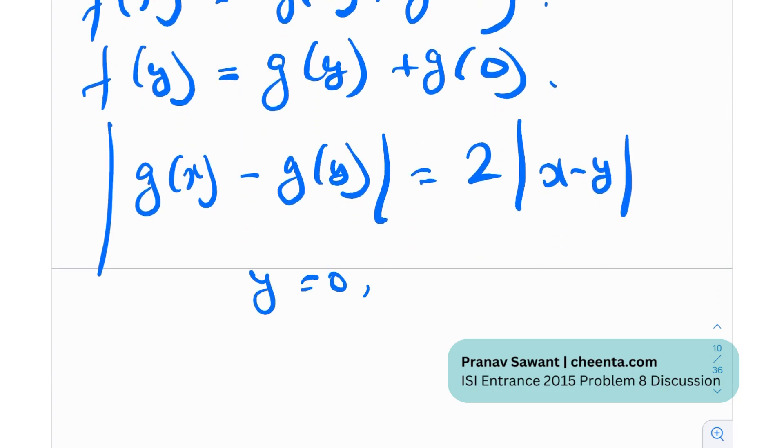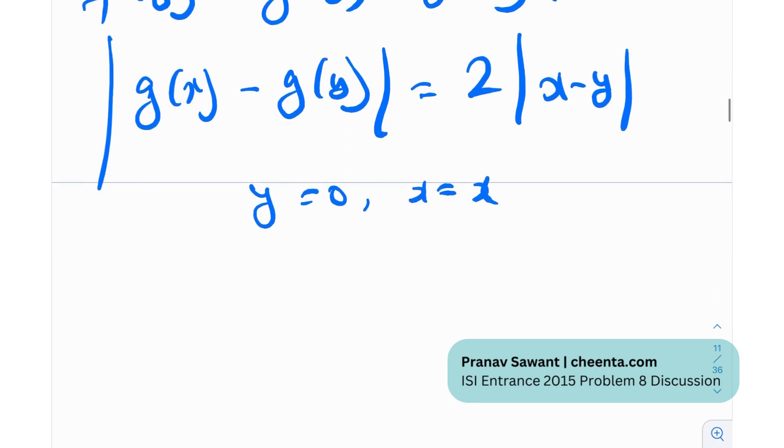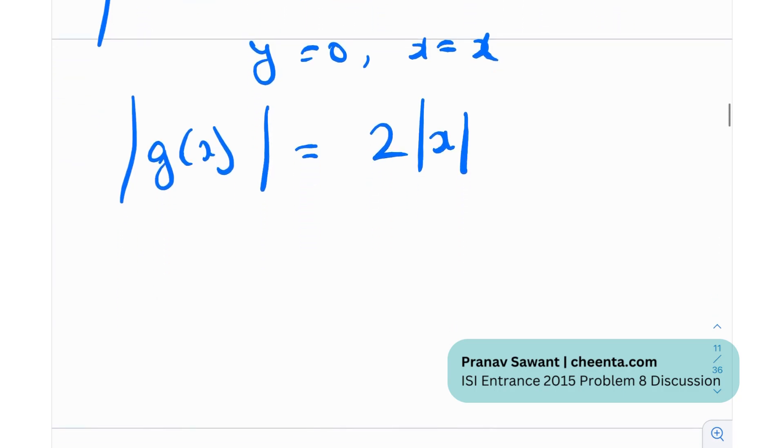Now I'm going to just plug in y equal to 0 and x equal to x. Simple substitution. So I'll get mod of g(x) minus g(0), which is 0, is equal to twice mod x. So essentially, when I have mod of g(x) equal to twice mod x, therefore g(x) has to be plus or minus 2x. So g(x) has to be plus or minus 2x because when you take mod, everything becomes positive anyways.